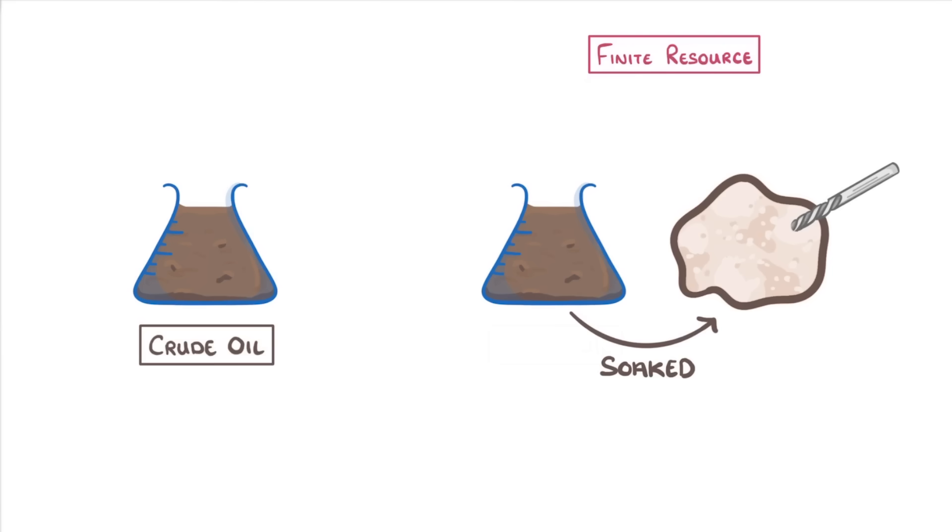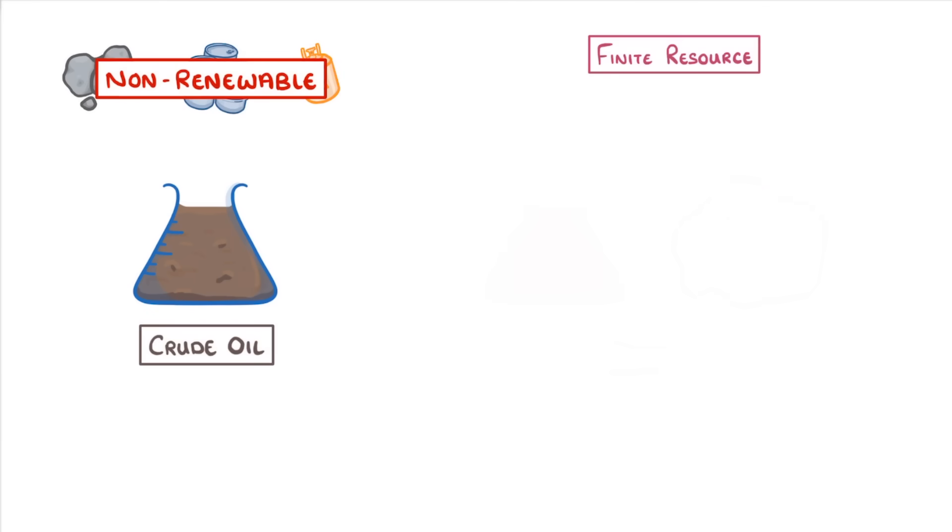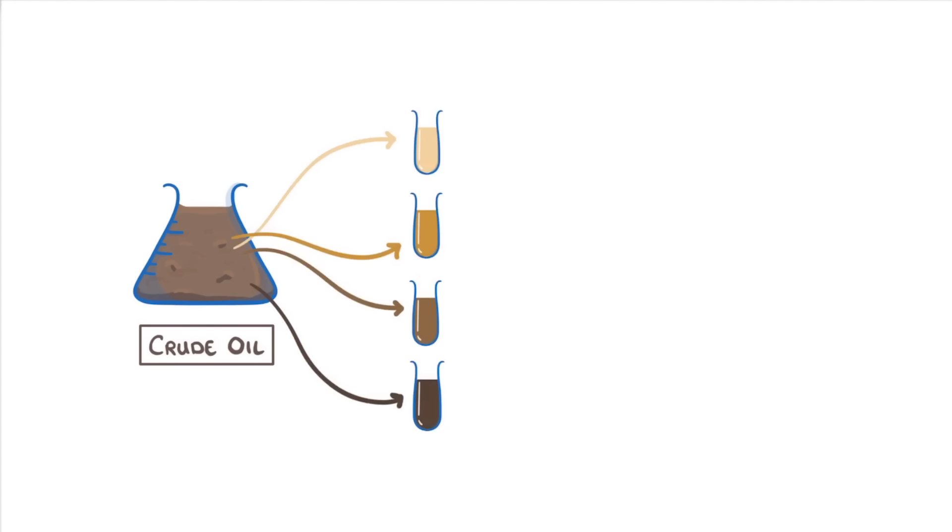This is why we refer to fossil fuels, like coal, oil and gas, as non-renewable fuels. Once we've extracted the crude oil from the ground, we need some way to separate out all of the different hydrocarbons in the mixture, because they each have different properties, and so we'll use them for different things.